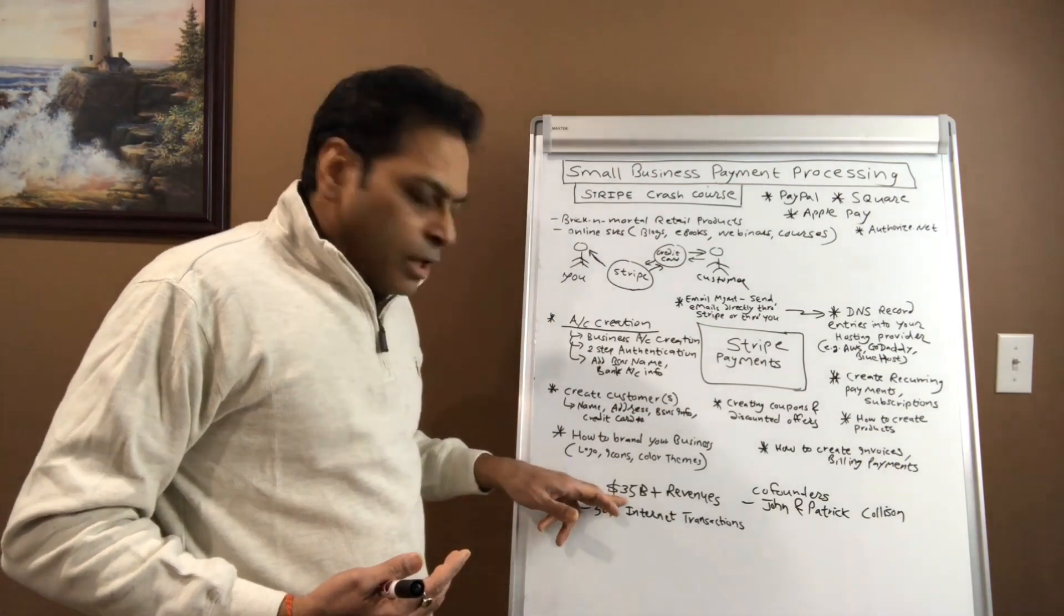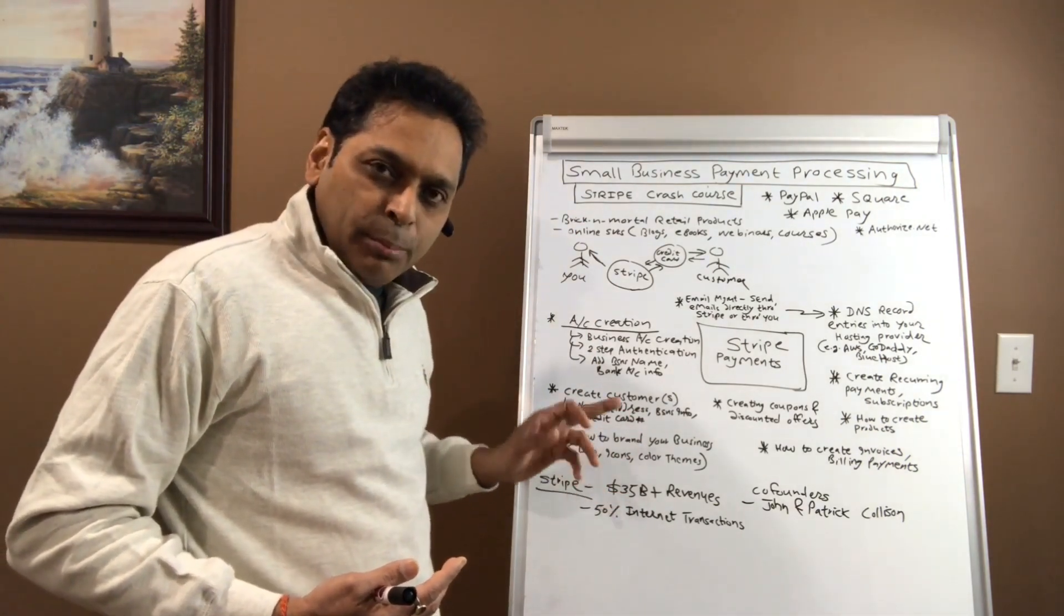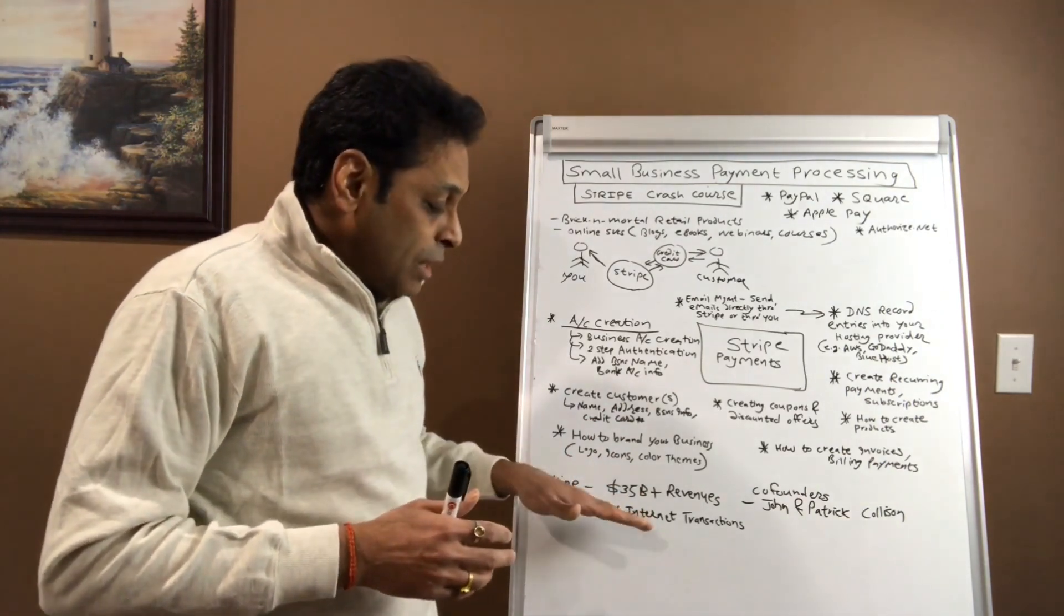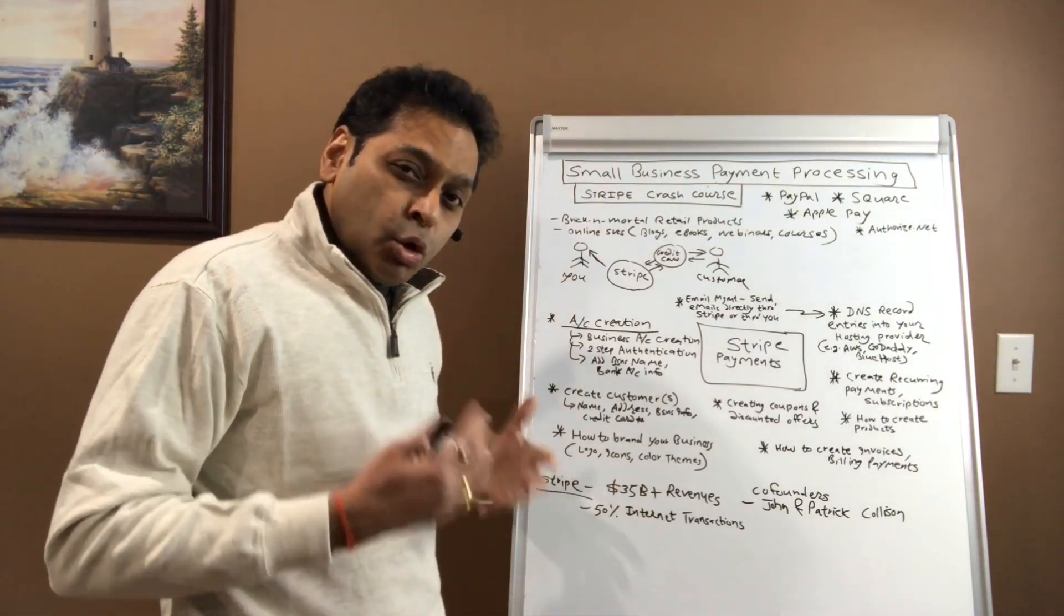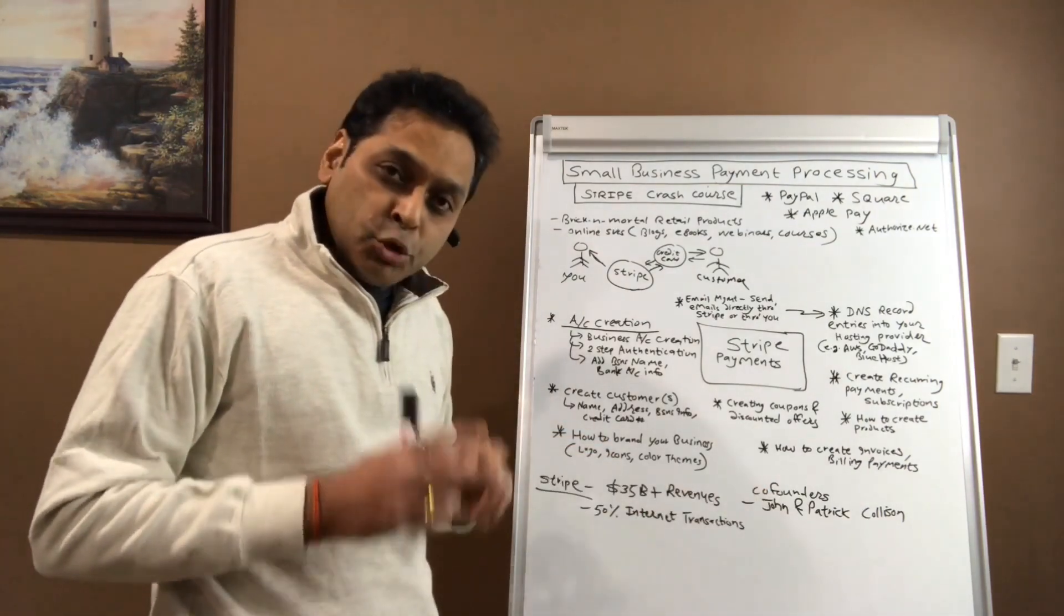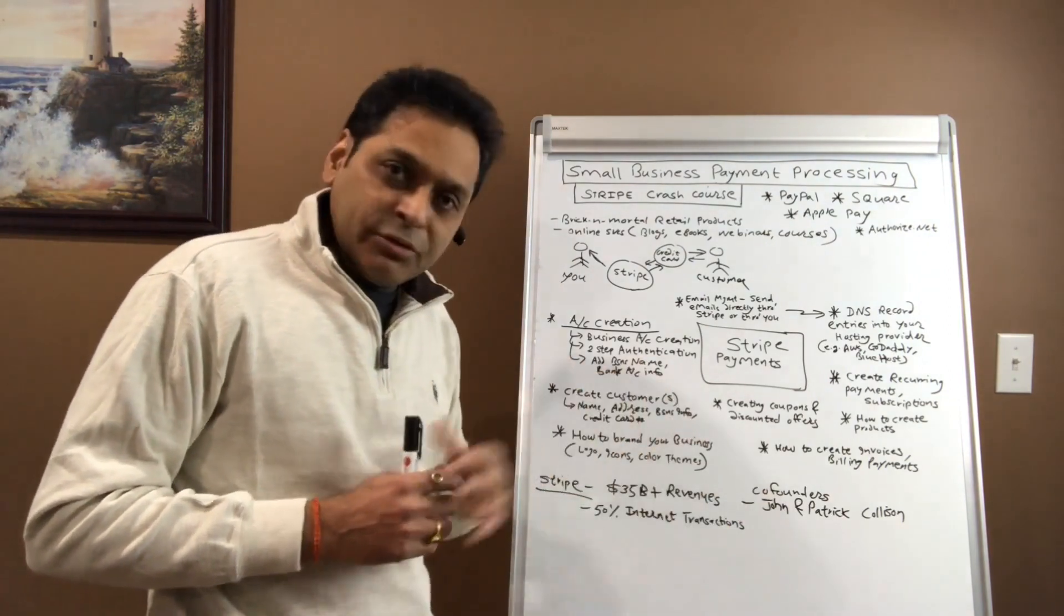But Stripe has immensely grown into popularity. They closed their books last year with 35 billion, B with a boy, 35 billion plus revenues. And it has become like a go-to system for small business owners. It was co-founded by two brothers from Ireland, John and Patrick Collison.